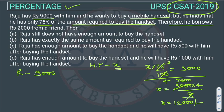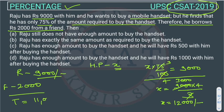Therefore, he borrows Rs.2,000 from a friend. Now Raju is having Rs.9,000 and he borrowed Rs.2,000 from his friend, so the total money with Raju will be Rs.11,000. And the price of the mobile handset is Rs.12,000.